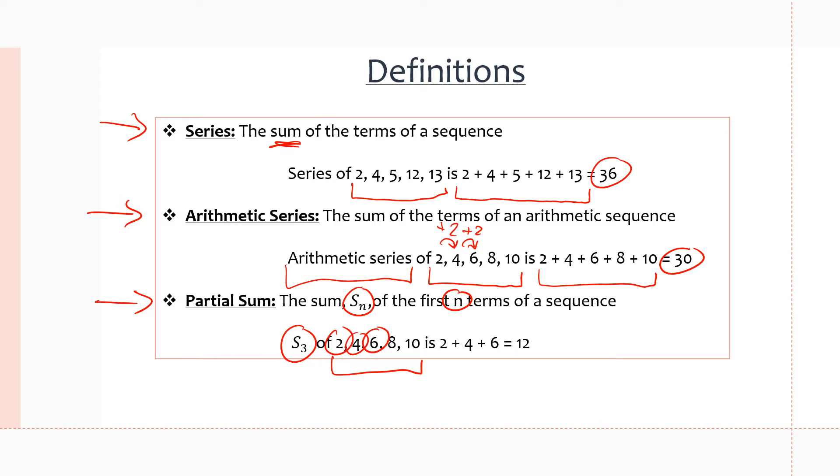2 is the first term, 4 is the second term, 6 is the third term. If we add them up, we get 2 plus 4 plus 6, which equals 12. Remember that little subscript tells us what term we want to go to.